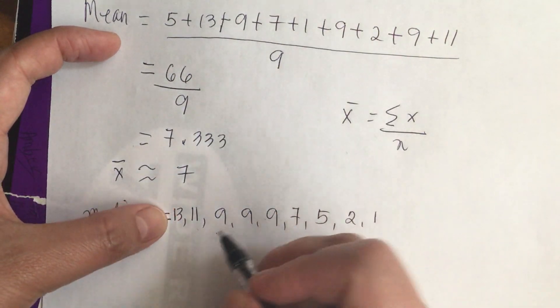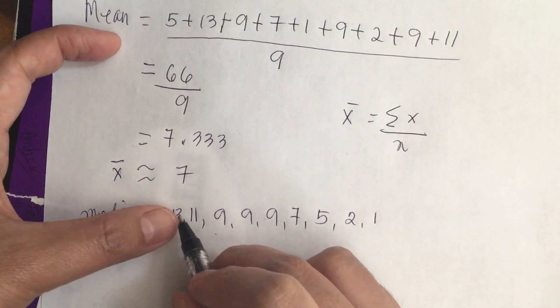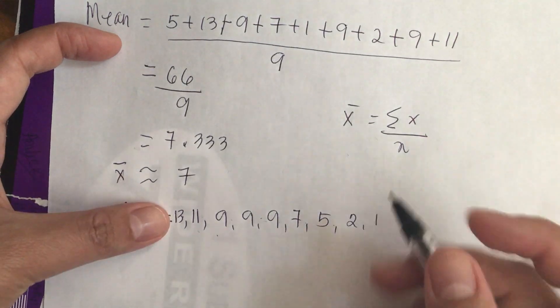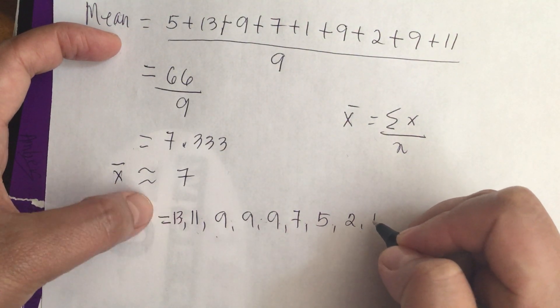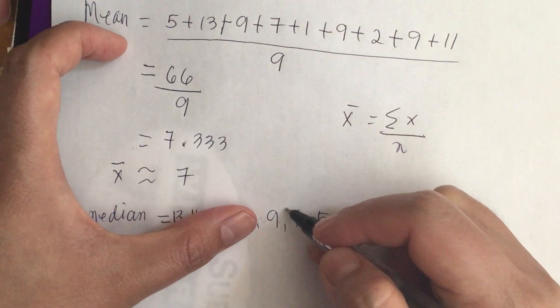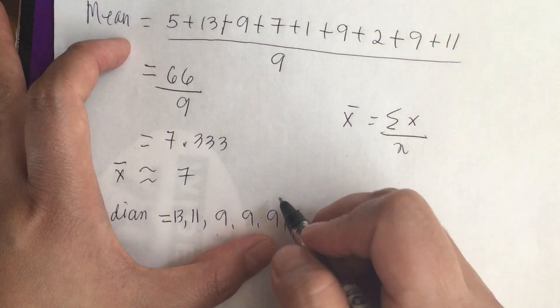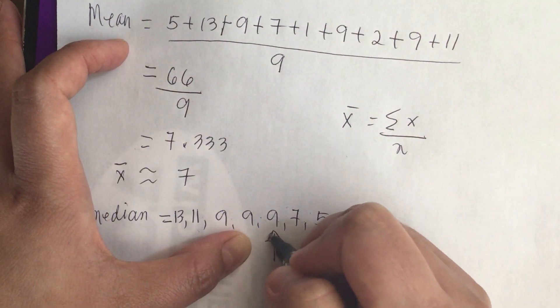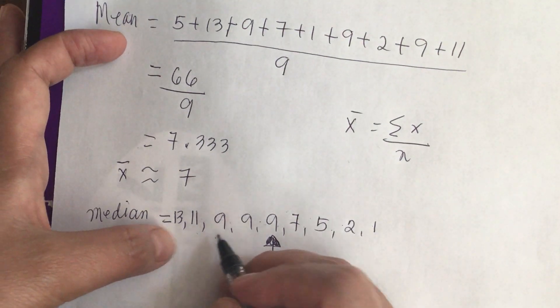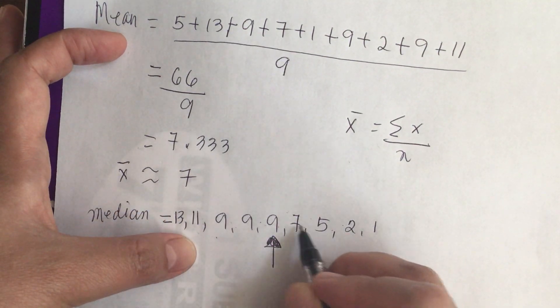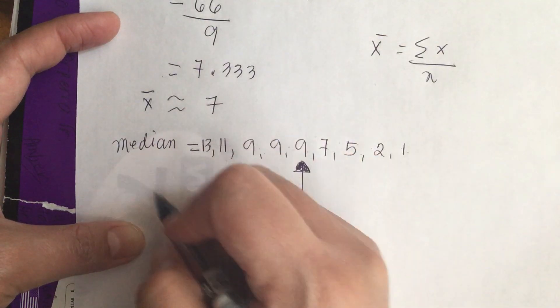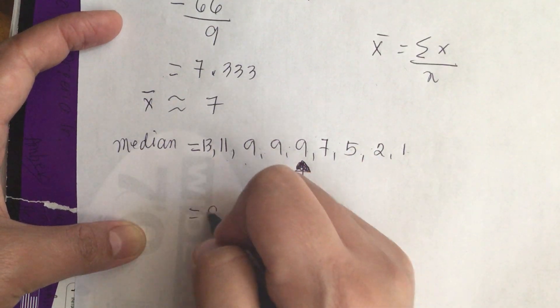Now the median is the number in the middle. 1, 2, 3, 4, 5, 6, 7, 8, 9. This is an odd number of data set, so this means that there is a number in the middle. This is the number in the middle. There are 4 numbers on the right and 4 numbers on the left. 1, 2, 3, 4, 1, 2, 3, 4. This is the number in the middle. Therefore, the median is equal to 9.